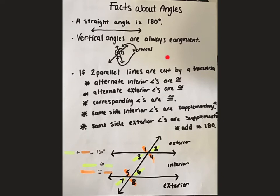And then when you have two parallel lines cut by a transversal, the alternate interior angles are congruent. So in this picture, angles 3 and 6 is alternate interior, and 4 and 5. Alternate exteriors would be 1 and 8, or 2 and 7.